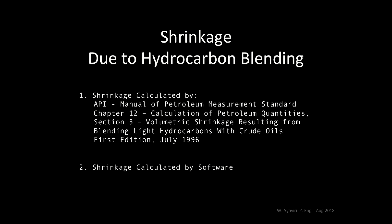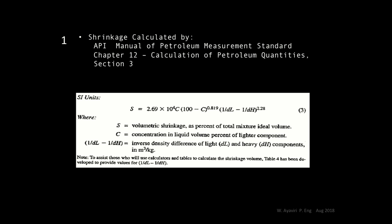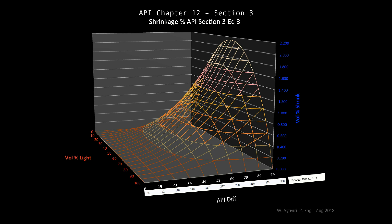Basically this standard was developed based on experimental data. They blended different crude oils with light hydrocarbons and volumes and density were measured at specific conditions. Based on that, they got this equation to calculate the shrinkage where the main parameters are volume and density. If we plot this equation, we will have this generic curve that relates shrinkage, density, and volumes. This chart shows the maximum shrinkage will occur when a 50-50 heavy and light crude oil blend is used.